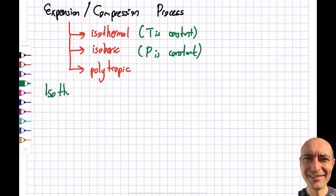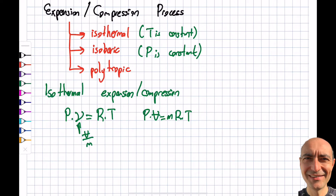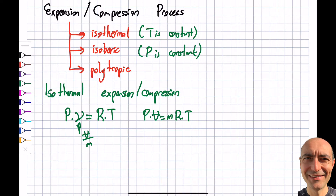So if it is an isothermal expansion or compression, let's look at the ideal gas law. We have P times V — where V is the specific volume, volume by mass — so I can write P·V = M·R·T. This R is not the universal gas constant, as discussed in previous segments. In a closed system, mass is not changing, R is a constant for a particular gas, and T is constant. So the right-hand side is constant, meaning P·V = C, a constant.